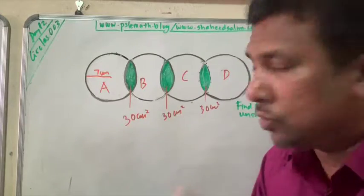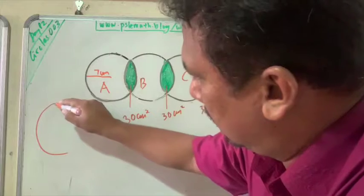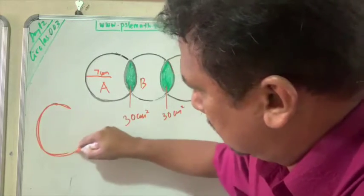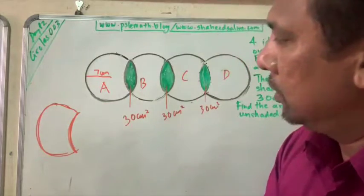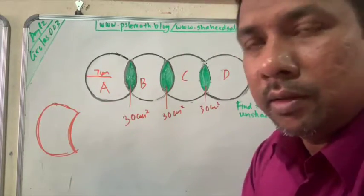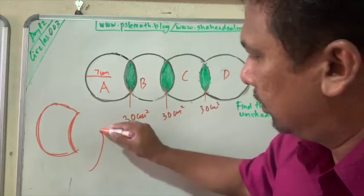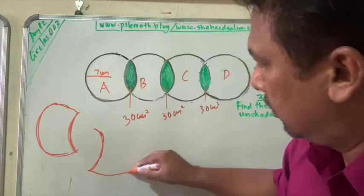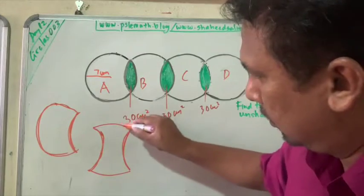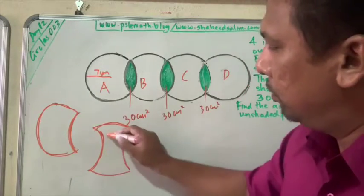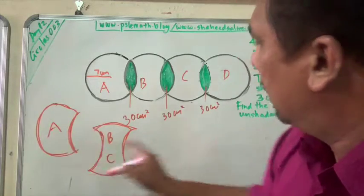You will find there's two types of shapes. A and D has the same shape, which is like that. It's almost like a full circle, but you have something cut out here. B and C has this shape. This is the shape for B and C, and this is the shape for A and D.